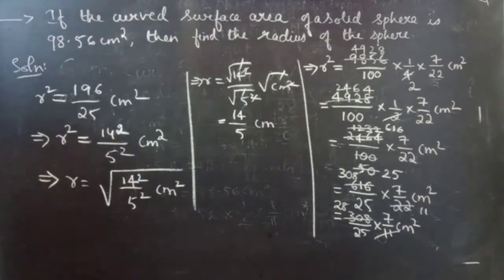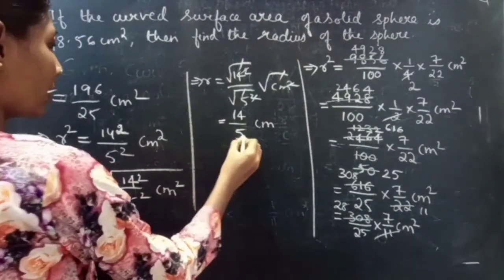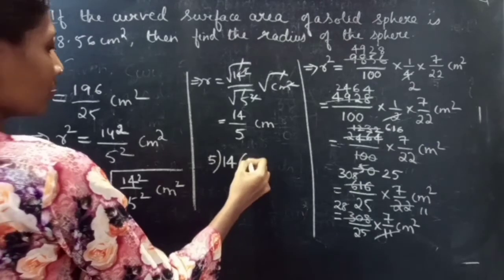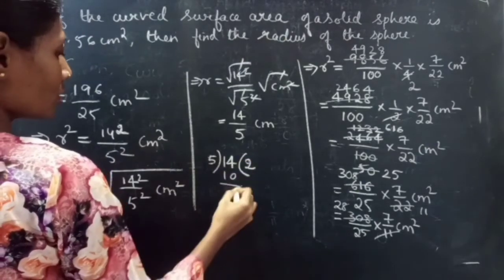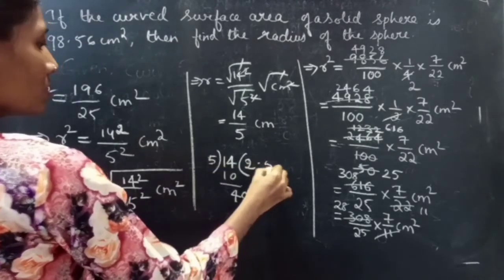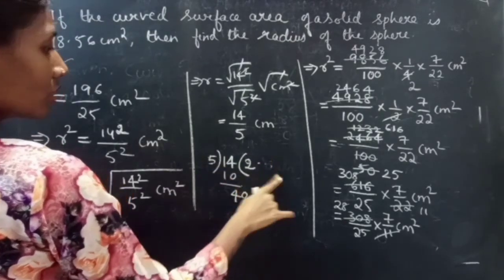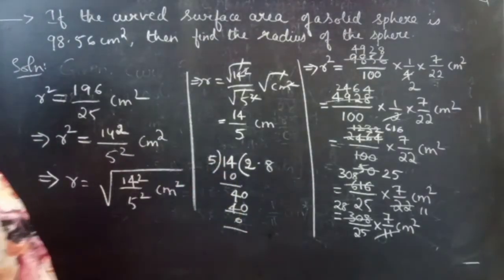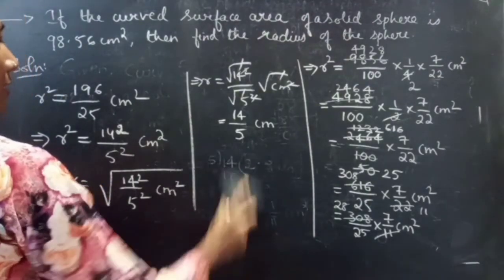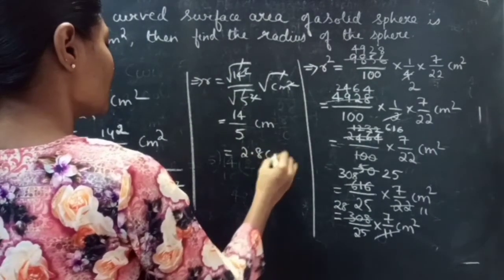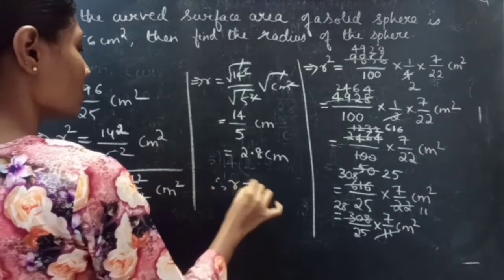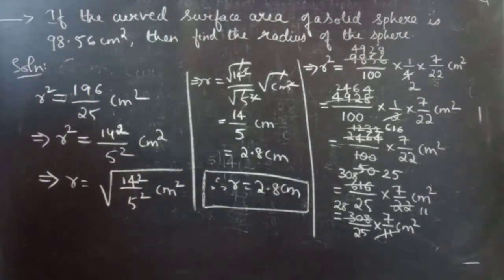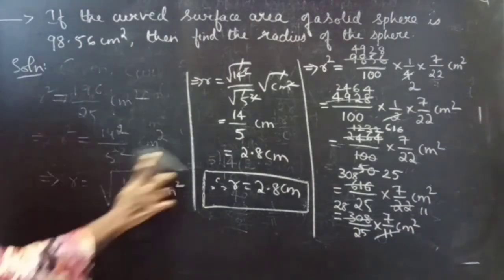So we can write it in decimals by dividing 14 by 5: 5×2=10, remainder 4, 5×8=40 — so 14 divided by 5 is 2.8. Therefore radius equals 2.8 centimeters. So the radius of the sphere is 2.8 centimeters.